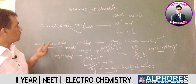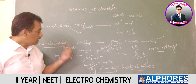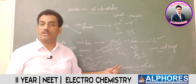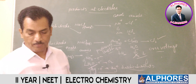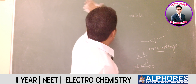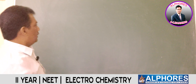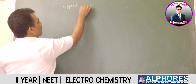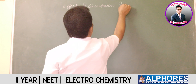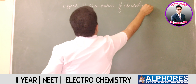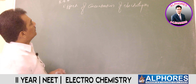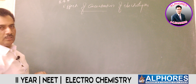Preferential discharge theory may be violated due to overvoltage. With active electrode participation, the anode dissolves in the solution — known as anodic dissolution. These factors were discussed in the previous session. Today we are going to discuss one more important factor that determines electrode products: the effect of concentration of the electrolyte.